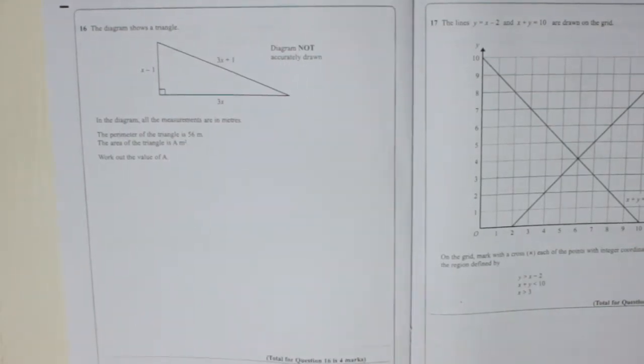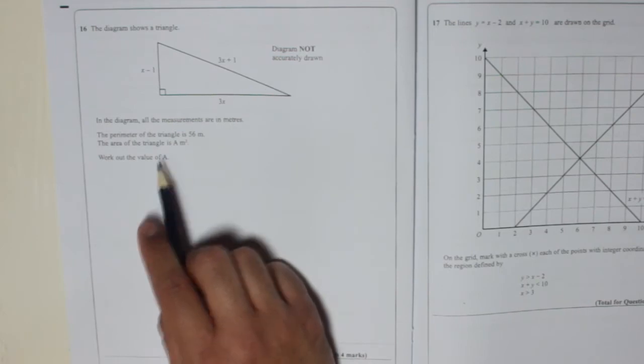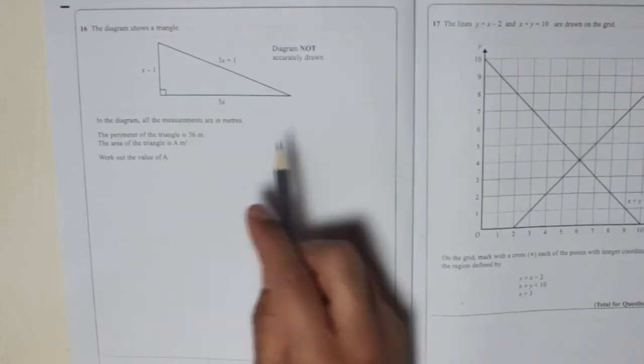So, area of the triangle is a. That's what we've got to work out, the area of the triangle. And remember that area of the triangle is base times height divided by 2.